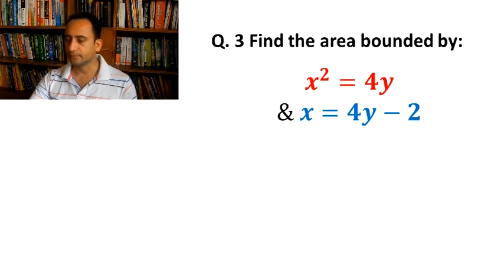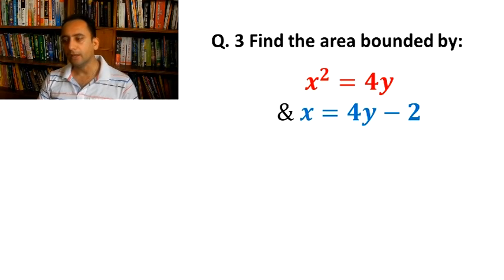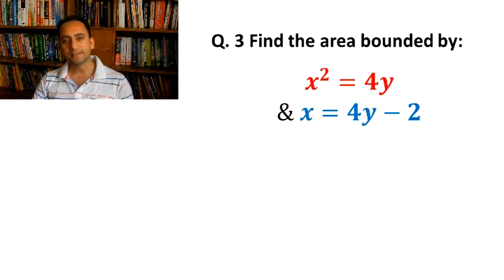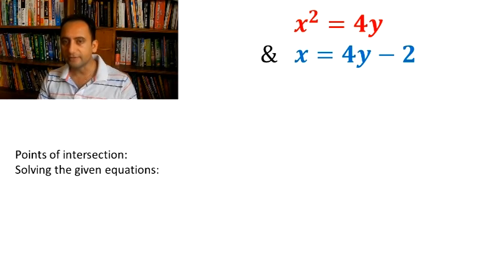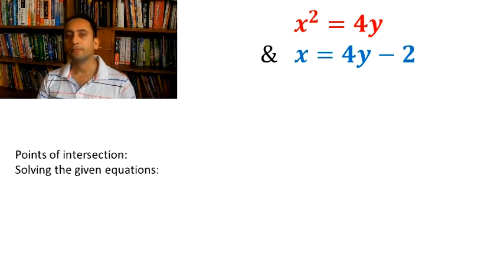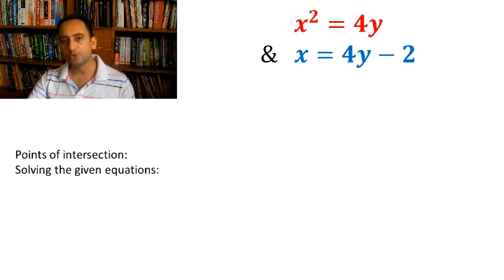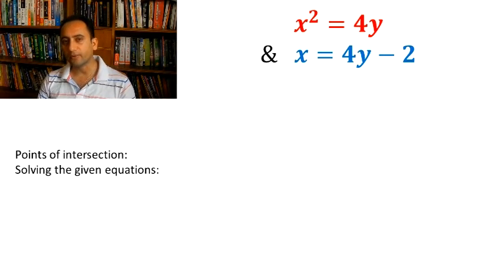Question number 3: Find the area of region bounded by the curves x² = 4y and x = 4y - 2. Before solving the problem, we should find the points of intersection by solving these two given equations. If we solve them, we will get the points of intersection as x = -1 and x = 2.